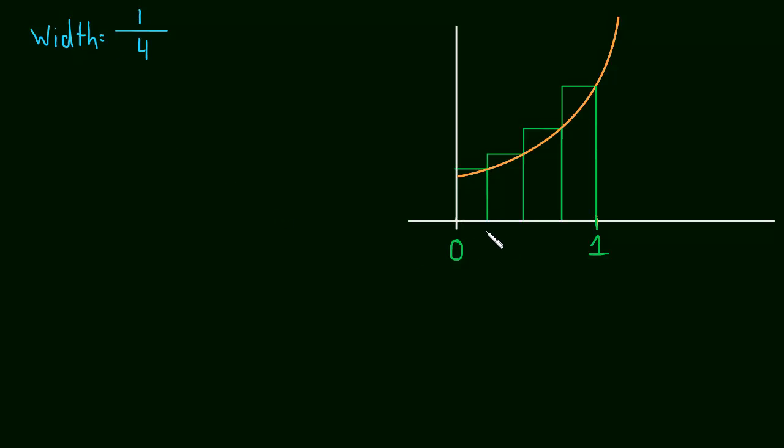So that means if we were to label these, this would be from zero to one-fourth, that's a width of one-fourth, and then from one-fourth to two-fourths, and two-fourths to three-fourths, and then finally three-fourths to four-fourths, but of course four-fourths is just one. So this makes sense.